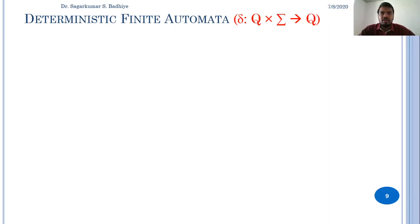In this class we are going to discuss deterministic finite automata. Deterministic finite automata is a kind of finite automata where the transition mapping is given by Q × Σ → Q.